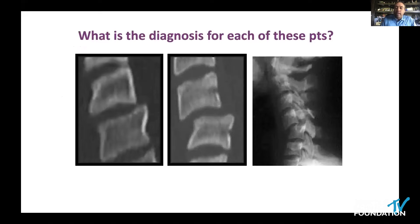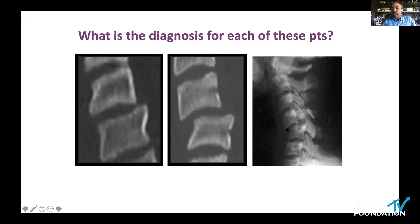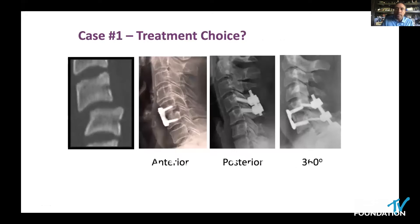This is a unilateral facet dislocation because we have less than 50% anterolisthesis. When you see this slight anterolisthesis, this is almost always a perched facet and not a true dislocated facet — the classic picture of unilateral facet fracture dislocation. When someone has bilateral facet fracture dislocation, you see greater than 50% anterolisthesis. You can make the diagnosis in the overwhelming majority of cases from that single image.